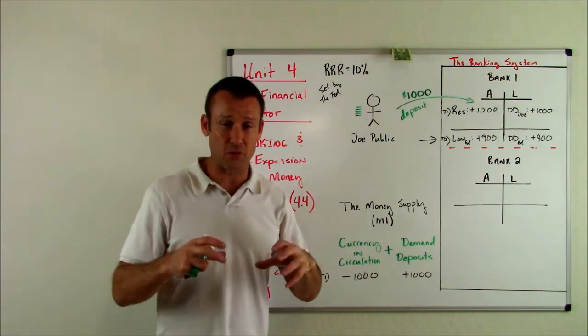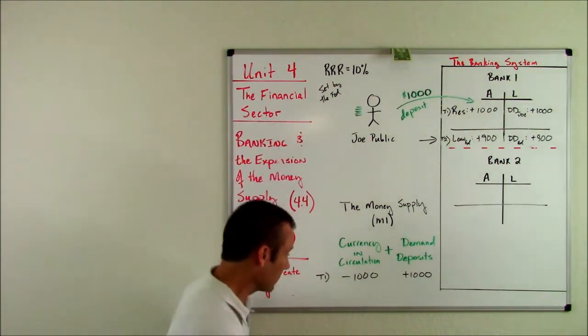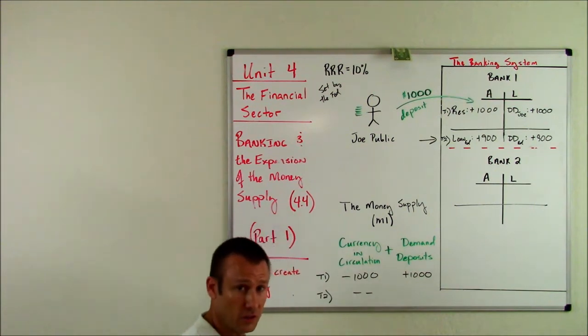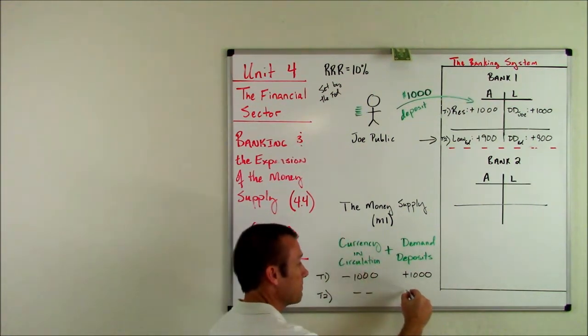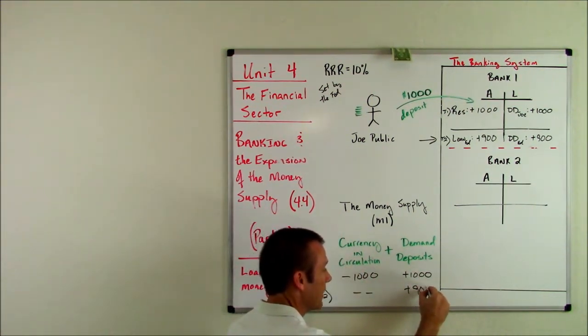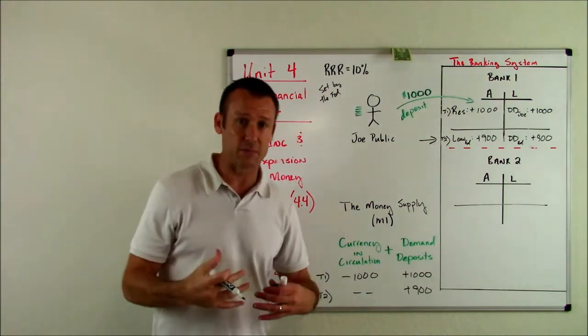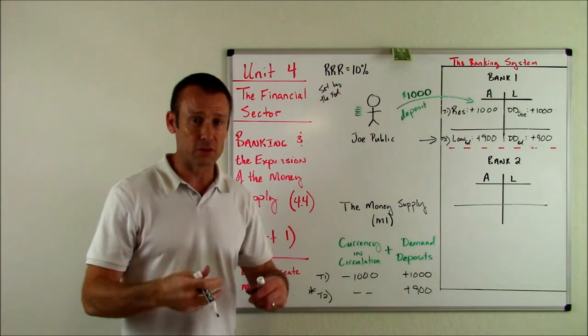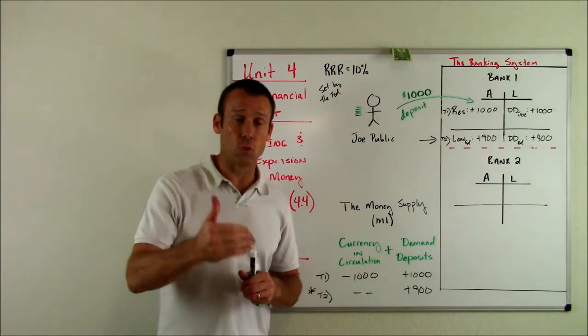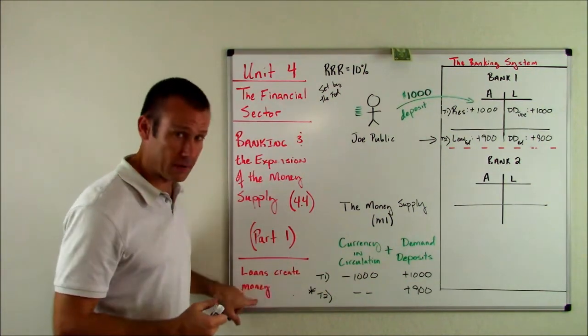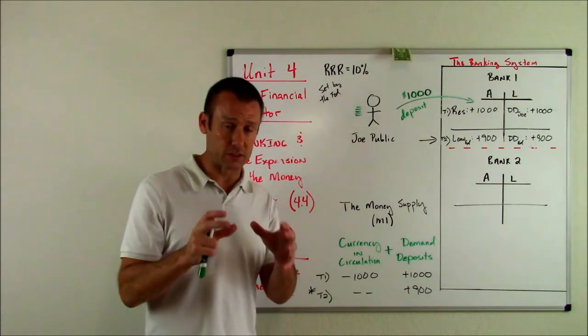In fact, let me go record it here. In T2, nothing happened to currency in circulation. However, demand deposits went up by $900. T2, which was the loan, that created money. We can now buy more goods and services because a loan was made. So one more time. Loans create money. Super important for us to get that.